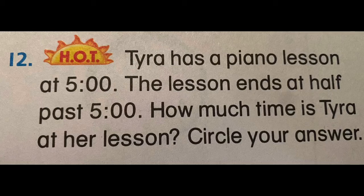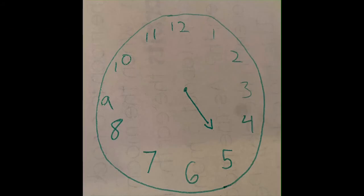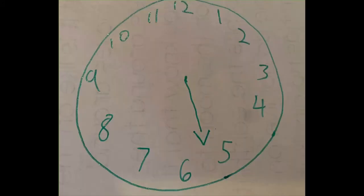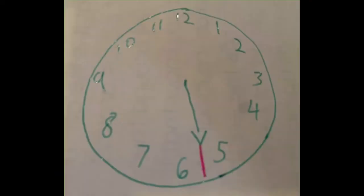Here's a tricky word problem. Tyra has a piano lesson at five o'clock. The lesson ends at half past five o'clock. How much time is Tyra at her lesson? To solve this problem, I drew a clock face for us. Tyra's lesson starts at five o'clock, so I drew my hour hand pointing right at the five. The problem says her lesson ends at half past five, so I drew that hour hand right in between the five and the six.